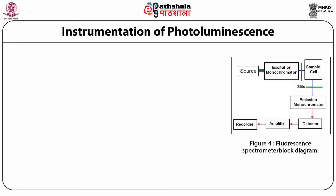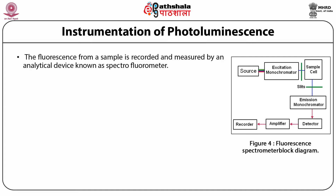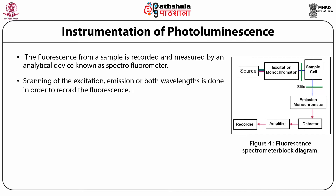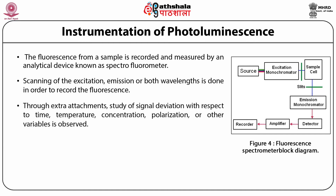Let us study the instrumentation of photoluminescence. The fluorescence from a sample is recorded and measured by an analytical device known as a spectrofluorometer. Scanning of the excitation, emission, or both wavelengths is done to record the fluorescence. Through extra attachments, study of signal deviation with respect to time, temperature, concentration, polarization, or other variables is possible. The block diagram of a fluorescence spectrometer is represented.